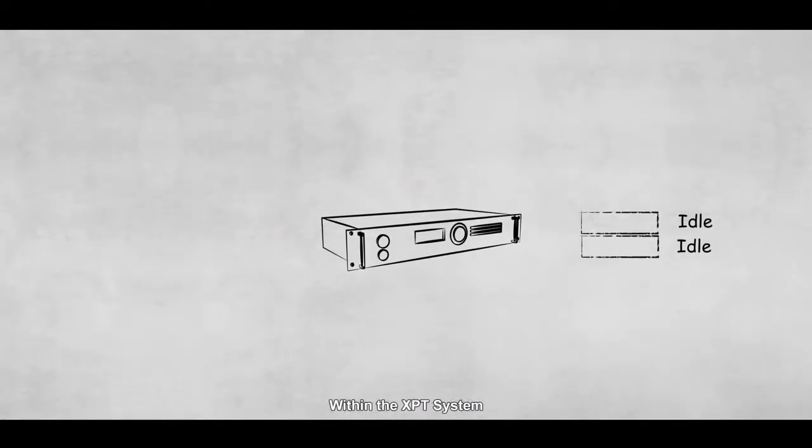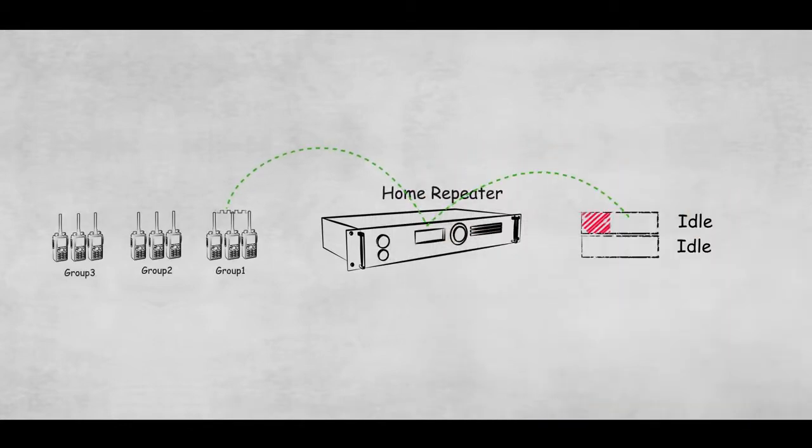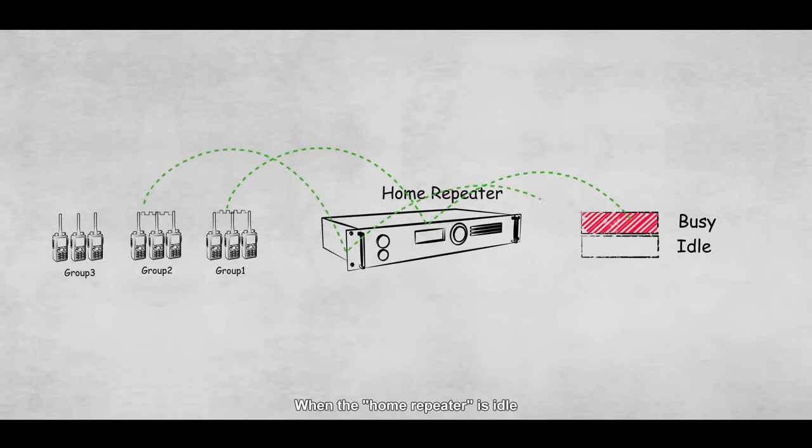Within the XPT system, groups of users will be allocated to a home repeater. When the home repeater is idle, all calls will be made through this repeater.